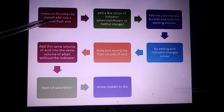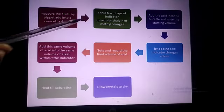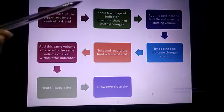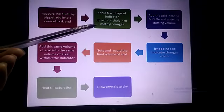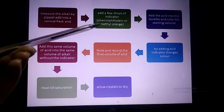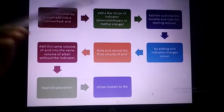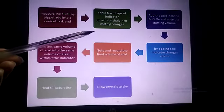Measure the alkali with the pipette and pour it into the conical flask. Then add the indicator - we can use phenolphthalein which gives out color, or the methyl orange indicator. The color change will tell the endpoint of the titration.